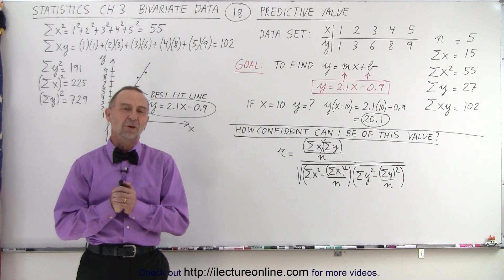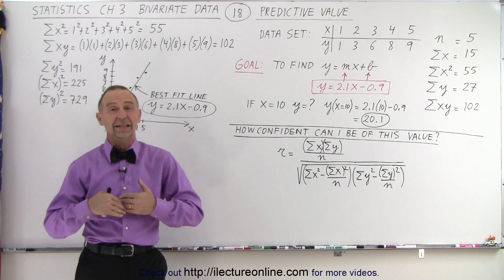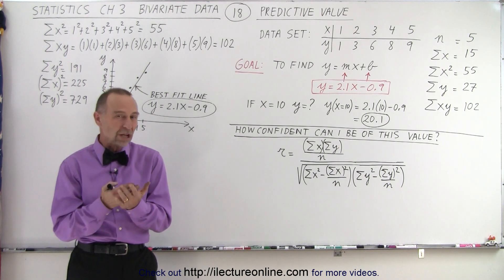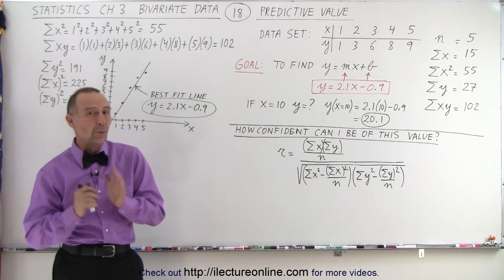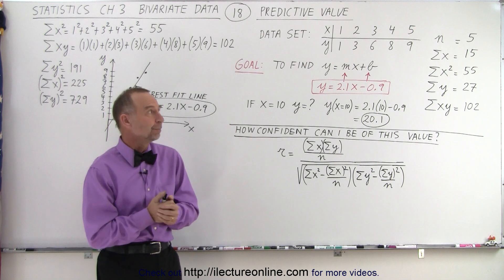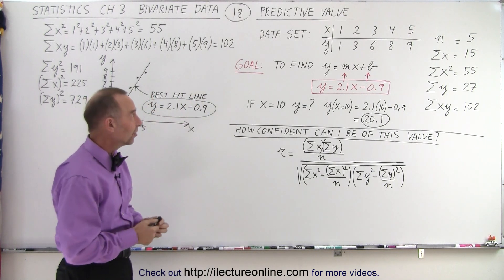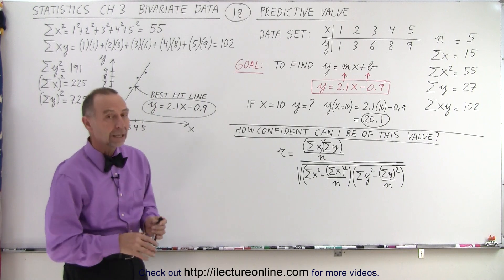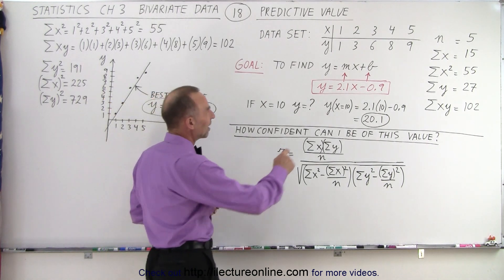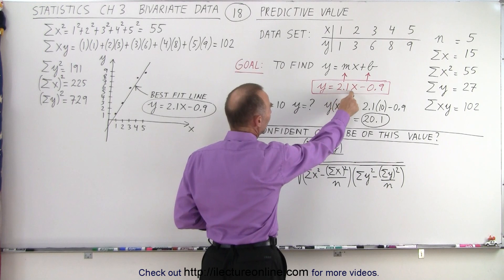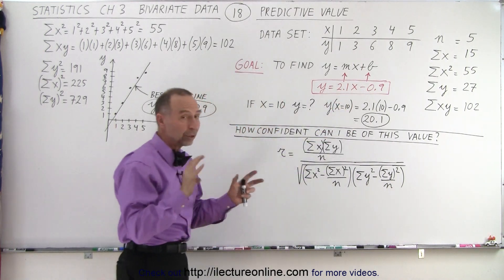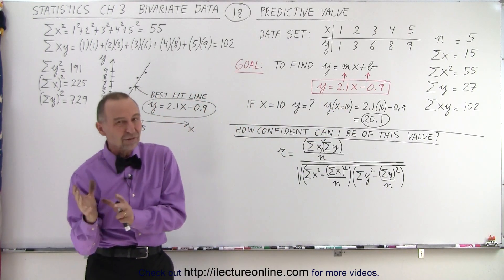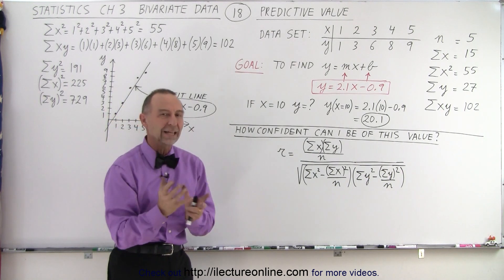Welcome to iLecture Online. So what's the purpose in finding the linear regression? Finding that equation that relates the x and y values of a set of data. We're taking the very same data set with the x values from 1 to 5, the y values from 1 to 9. We found that best fit line defined by the equation y equals 2.1x minus 0.9. So that equation relates the x values to the y values in our data set.